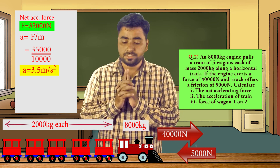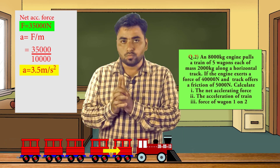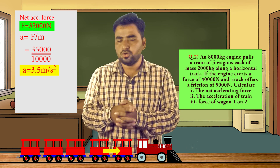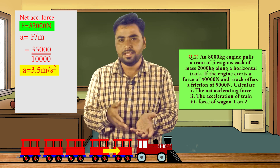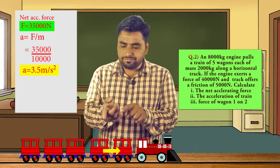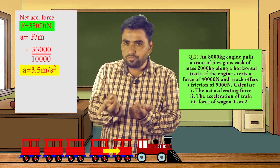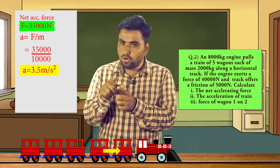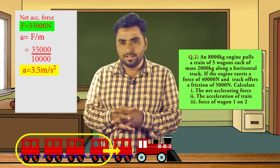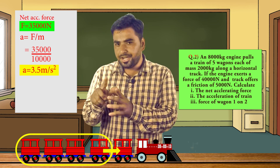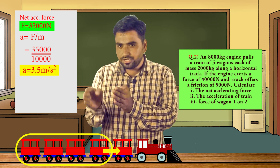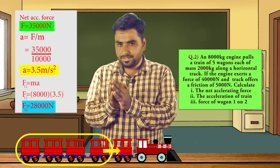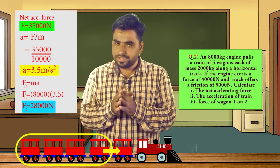Now for the force exerted by wagon 1 on wagon 2 — we use F = ma again. The acceleration is common for all: 3.5 m/s². The mass to consider is the mass of wagon 2 and all wagons ahead of it — that is 4 wagons × 2000 kg = 8,000 kg. So F = 8,000 × 3.5 = 28,000 Newton.